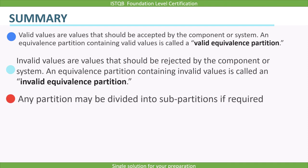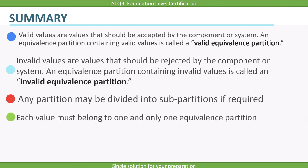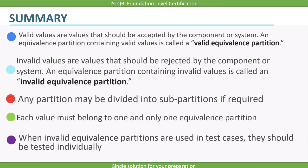Any partition may be divided into sub-partitions if required. What it means is that within the valid equivalence partition, we can have multiple partitions — we will cover this in upcoming lectures. Each value must belong to one and only one equivalence partition. And when invalid equivalence partitions are used in test cases, they should be tested individually.